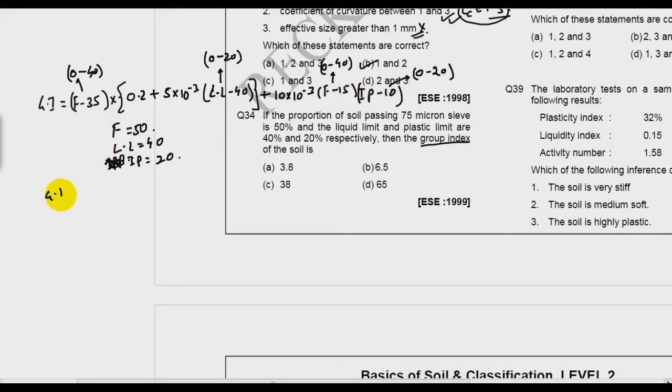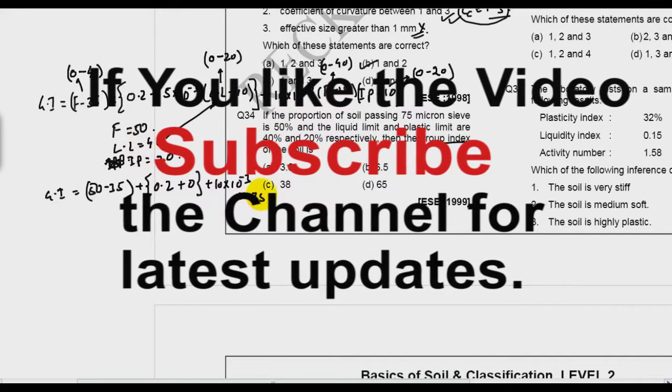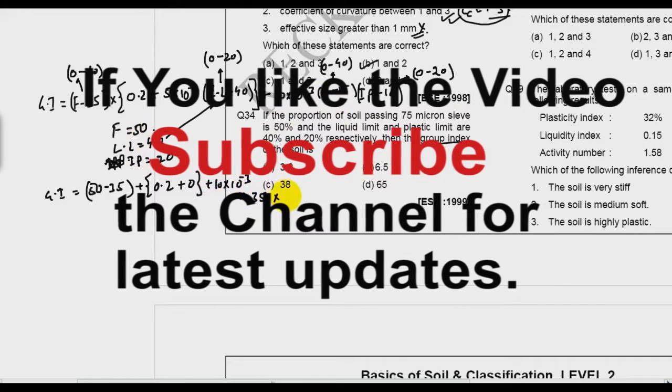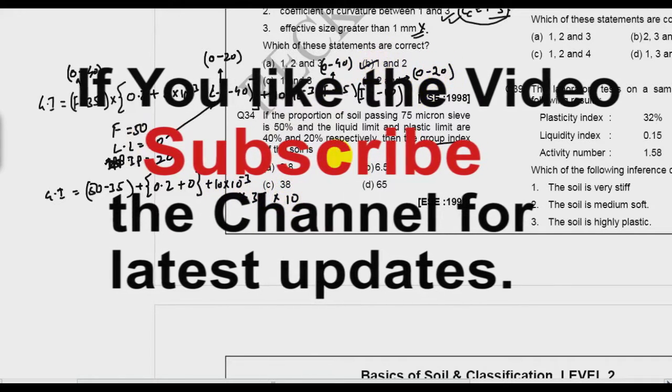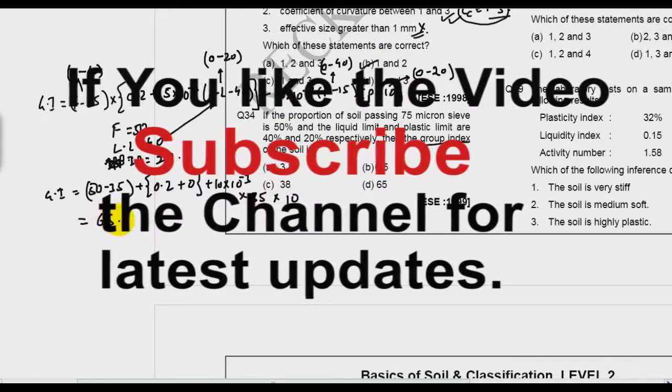So what is my group index now? 50 minus 35 plus 0.02 plus liquid limit is 40, so this becomes 0, plus 10 into 10 raised to power minus 3 into f minus 35 into IP is 10. Everything is in the limit, so I need not bother about that. If you solve you will get 6.5.